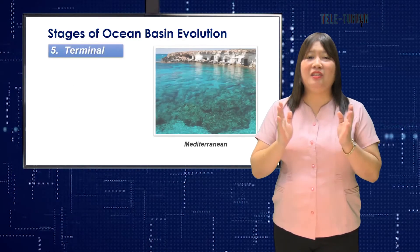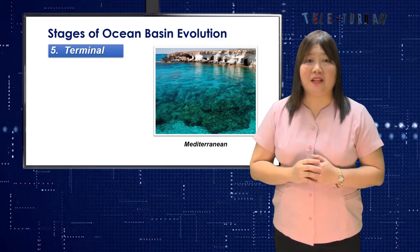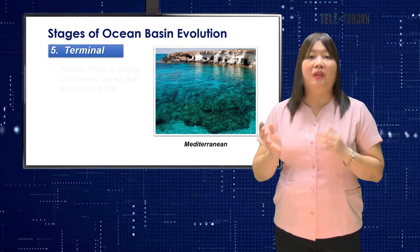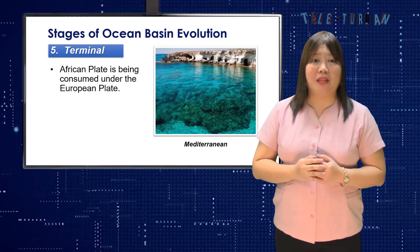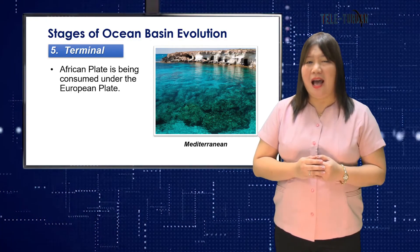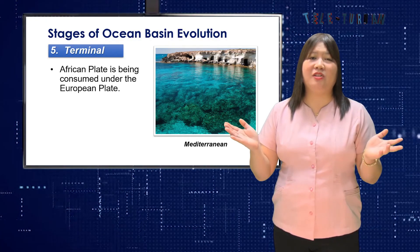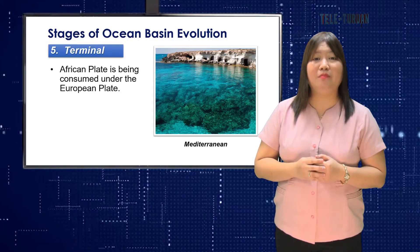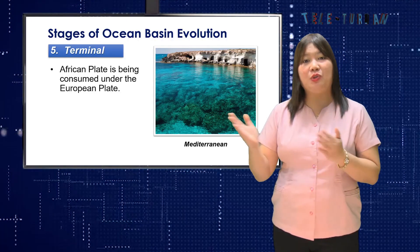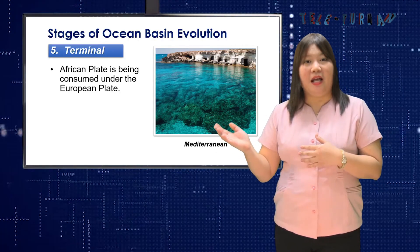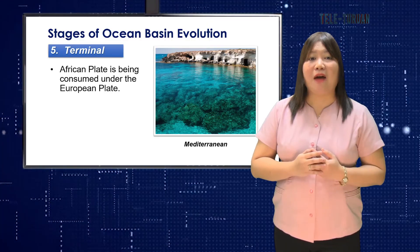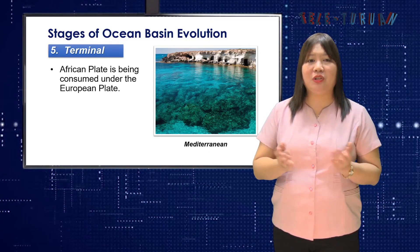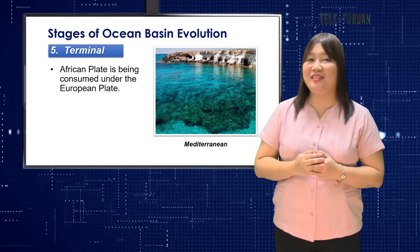The Mediterranean is an ocean in the final stages of its life in Stage 5, with the African plate being consumed under the European plate. Unless the world system of plates changes so as to halt the northward movement of Africa relative to Europe, the continental blocks of Europe and Africa will eventually collide and new mountain ranges will form.